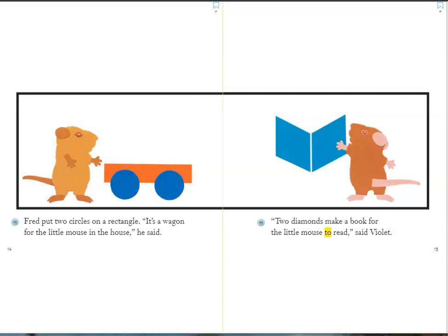Fred put two circles on a rectangle. "It's a wagon for the little mouse in the house," he said. "Two diamonds make a book for the little mouse to read," said Violet.